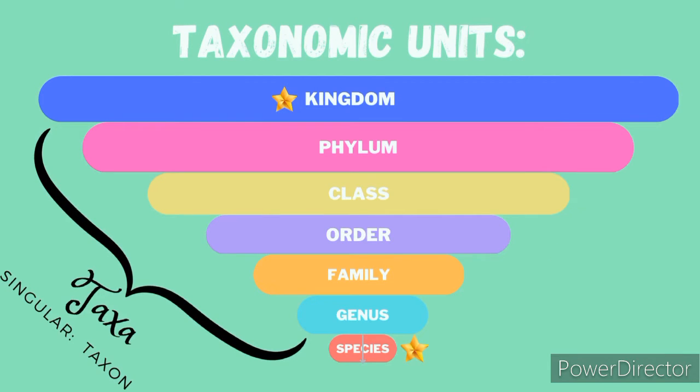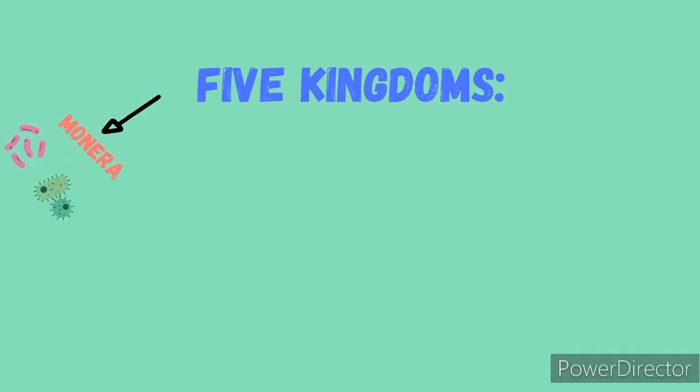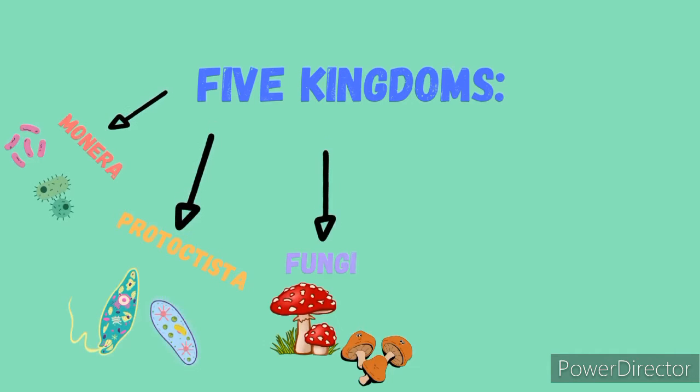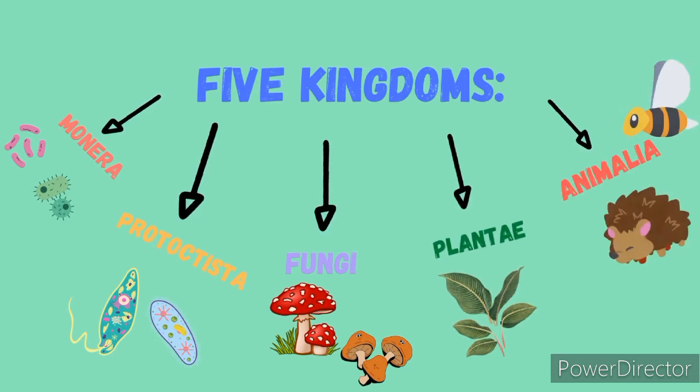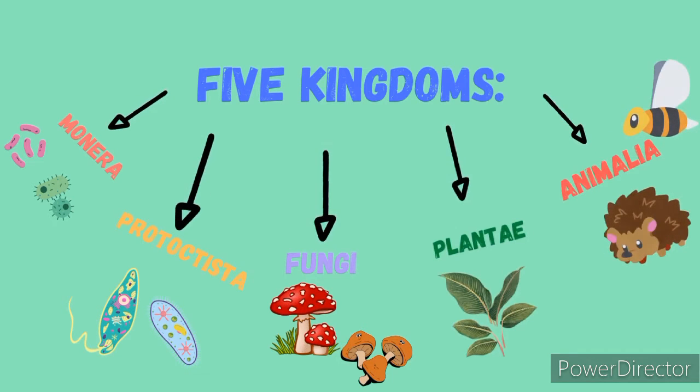Now let us start with the kingdoms. There are 5 kingdoms in which organisms are placed into, and an organism can only belong in one kingdom and no more. We have monera, protocytista, fungi, plantae, and lastly animalia.